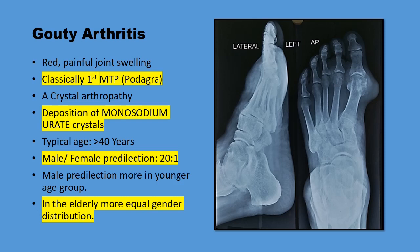There is deposition of monosodium urate crystals in the synovial joints and in the surrounding tissue. The typical age of presentation is more than 40 years. Males are more likely to get affected when compared to females, with a ratio of predilection of 20 to 1. This male predilection is more pronounced in the younger age group; in the elderly, the gender distribution is more equal.